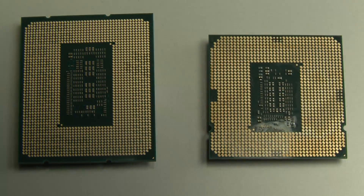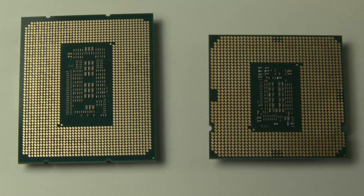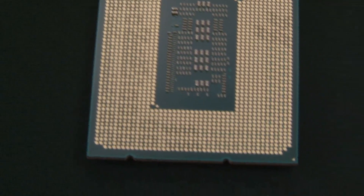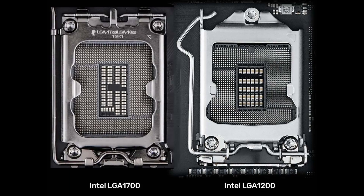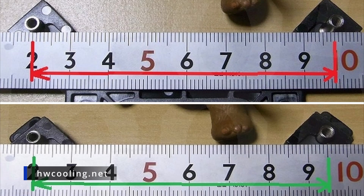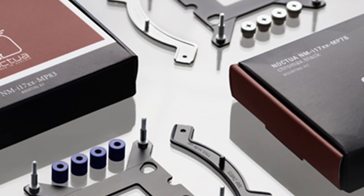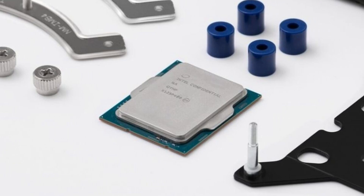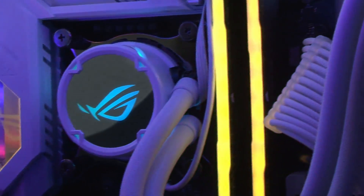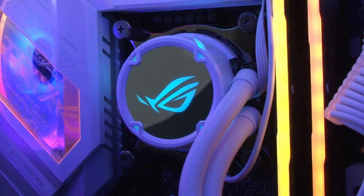Another major difference between Intel 12th and 11th Gen is the socket size itself. Intel's 12th Gen processor is physically bigger, utilizing LGA 1700 instead of the traditional LGA 1200 used in 11th and 10th Gen processors. Unfortunately, current motherboards will not be backwards compatible with older CPU coolers. However, there are LGA 1700 brackets that individual companies supply, and new CPU coolers already include an LGA 1700 bracket out of the box.